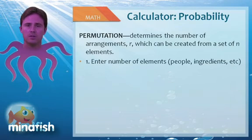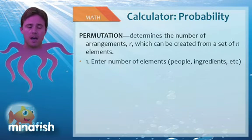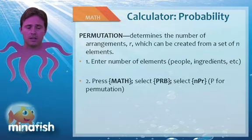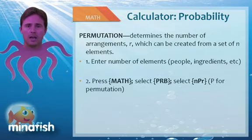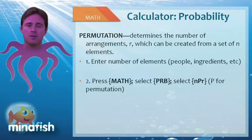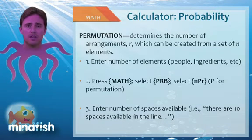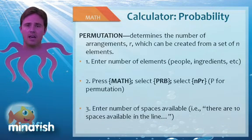To do this, first hit 10, then go to math, the math button, select probability, pick NPR, and hit enter. Now it will say in your calculator 10 NPR. Lastly, type 3 because we're going to pick an arrangement of three things, or into three spots, and then hit enter.